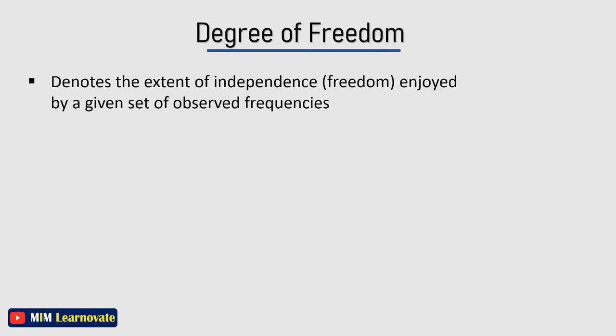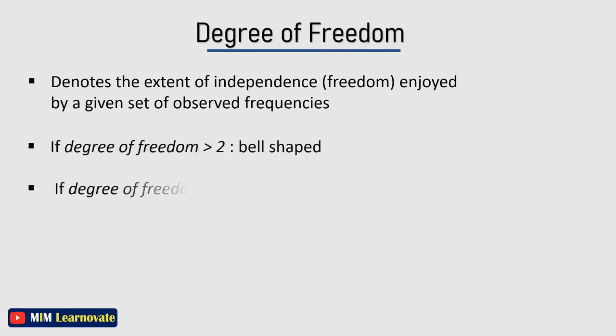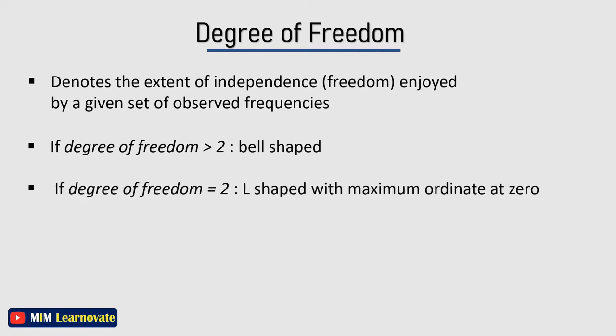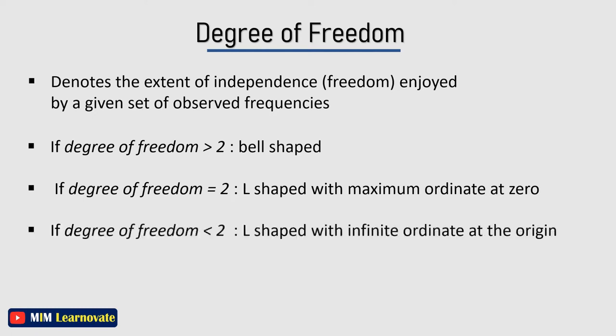The degree of freedom denotes the extent of independence enjoyed by a given set of observed frequencies. If the degree of freedom is greater than 2, then the distribution is bell-shaped. If the degree of freedom is equal to 2, then the distribution is L-shaped with maximum ordinate at the origin.